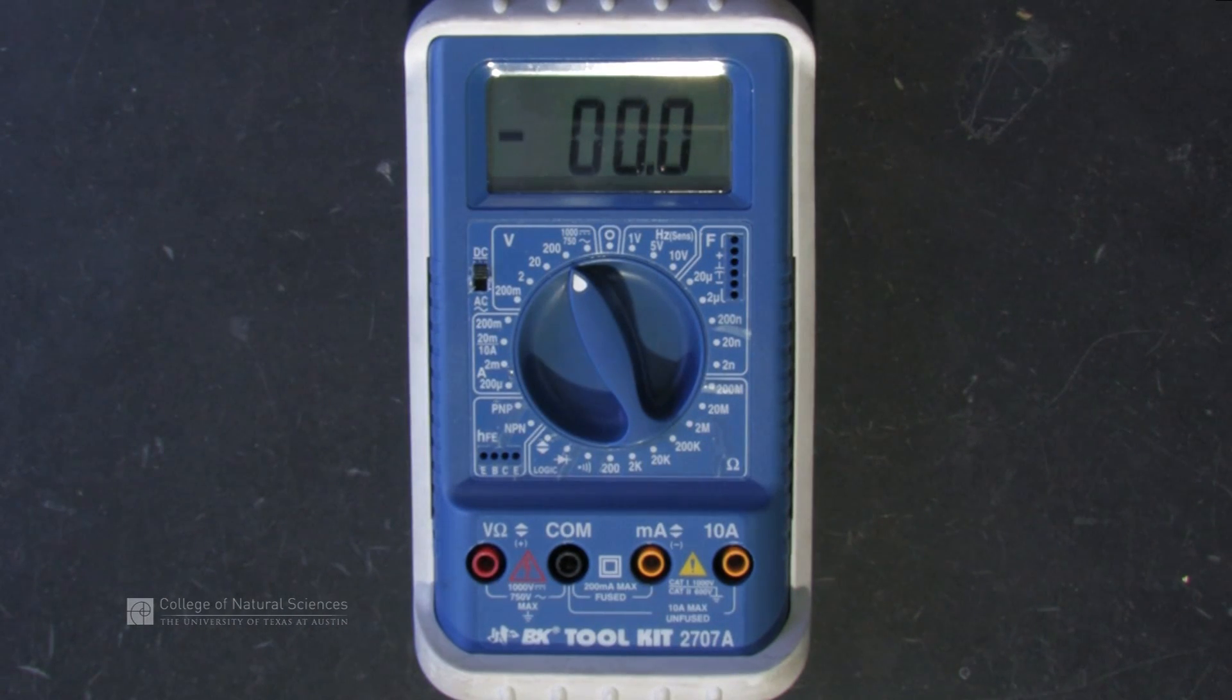Now set the digital multimeter to measure the correct quantity. For example, if you're measuring voltage, you turn the multimeter to the voltage setting and select the highest value.